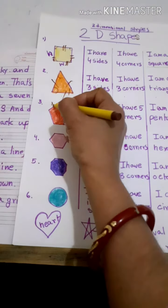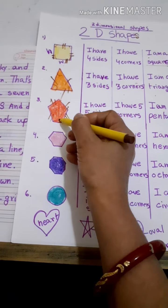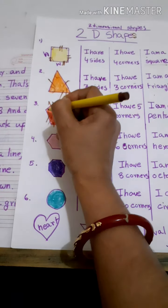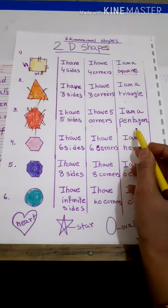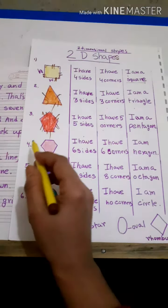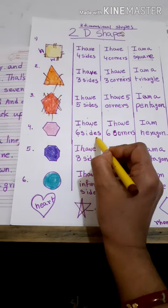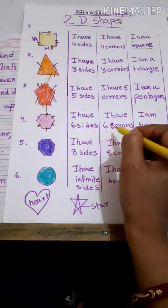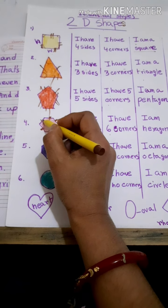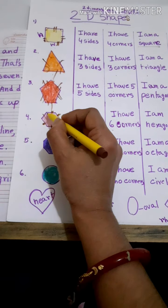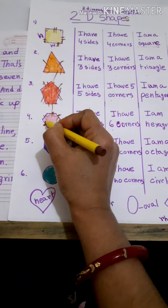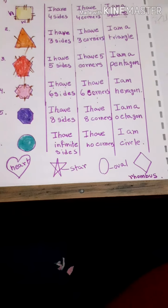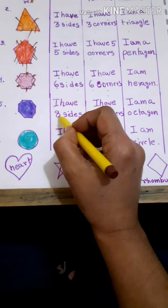The third one — I have five sides: one, two, three, four, five. I have five corners: one, two, three, four, five. Who am I? I am a pentagon. Number four — I have six sides: one, two, three, four, five, six. The corners are also the same as the sides — six corners: one, two, three, four, five, six. Who am I? I am a hexagon.